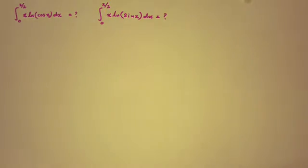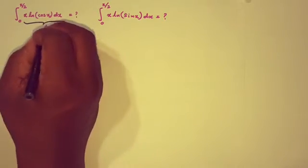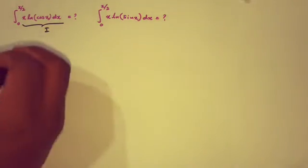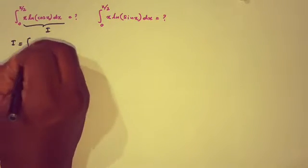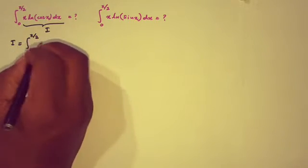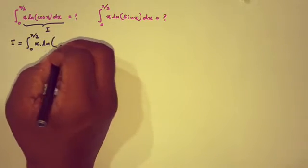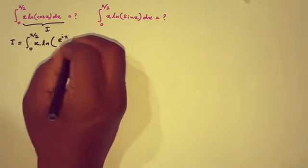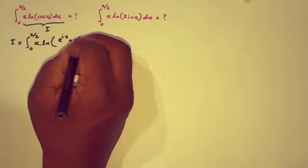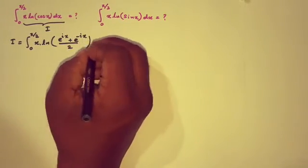How to begin? First, I am going to evaluate the first integral and I am going to call it I. So we can write I equals the integral from 0 to π/2 of x times the natural log of cosine x dx. Now, instead of cosine of x, I am going to use (e^(ix) + e^(-ix)) / 2 dx.